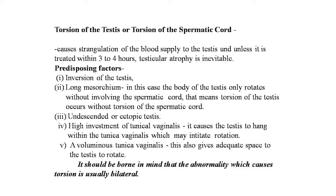With a long mesorchium, the body of the testis rotates without involving the spermatic cord — torsion of the testis occurs without torsion of the cord. A third predisposing factor is undescended or ectopic testis. High investment of the tunica vaginalis causes the testis to hang within it, which may initiate rotation. A voluminous tunica vaginalis also gives adequate space for the testis to rotate. The abnormality causing torsion is usually bilateral.